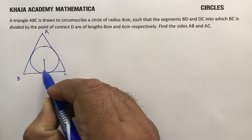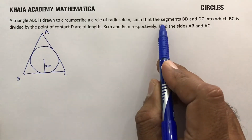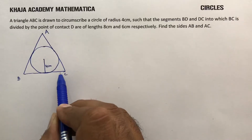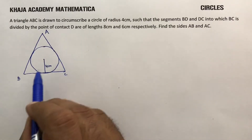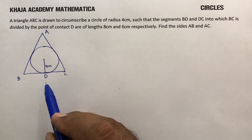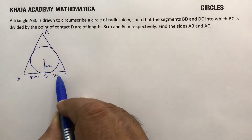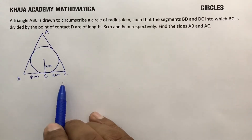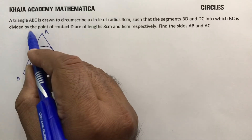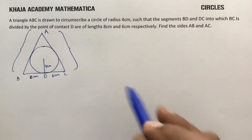This radius is 4 centimeters, such that the segments BD and DC into which BC is divided by the point D are of length 8 centimeters and 6 centimeters respectively. BD is 8 centimeters, DC is 6 centimeters. We need to find AB and AC.